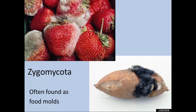In this presentation I'm going to talk about some examples of the division Zygomycota. The zygomycetes are often found as mold that grows on foods. This black fuzzy growth is actually black bread mold, which just happens to be growing on a sweet potato in this example. I'm sure we've all had the experience where we have some fruit that ends up growing mold on it — those are often in this division Zygomycota.